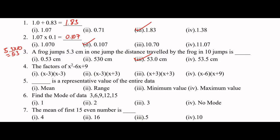Factors of x² minus 6x plus 9. We need two numbers that multiply to give plus 9 and add to give minus 6. Looking at minus 3 and minus 3: minus 3 into minus 3 is plus 9, and minus 3 plus minus 3 is minus 6. So the answer is the first option.